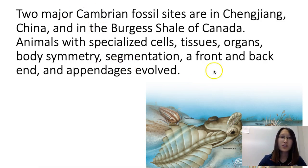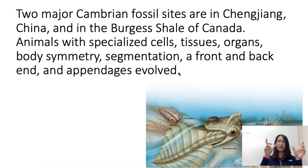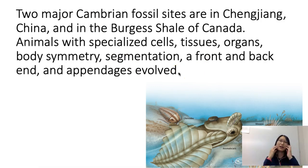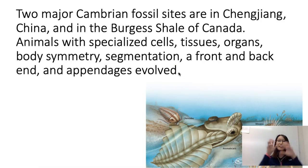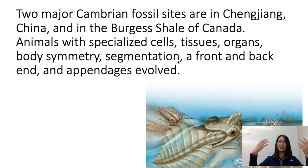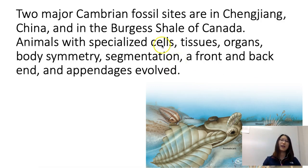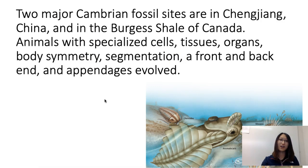There's also segmentation. If you think about a spider or an ant, a lot of insects have different segments of the body — that's segmentation. There's a front end and a back end, and then we have appendages such as our arms.